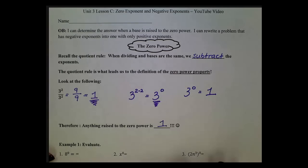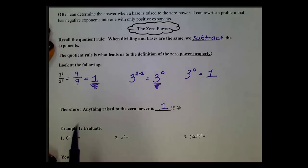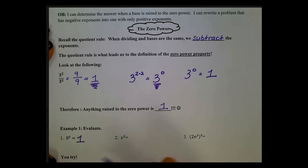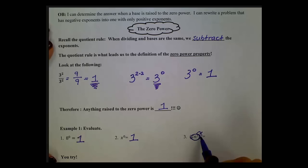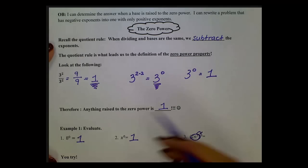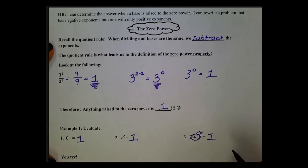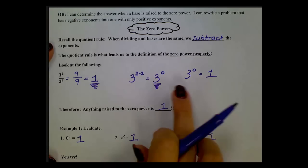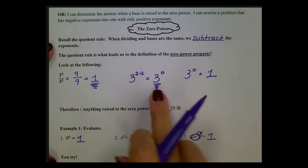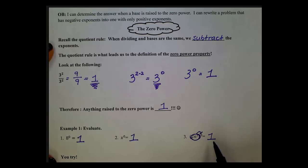Looking at examples: 8 to the 0 power is 1. x to the 0 power is 1. Even when we have something raised entirely to the 0 power, anything to the 0 power is 1. That's the zero power property — here we examined how it came to be, and what you need to know is that anything to the 0 power is 1.